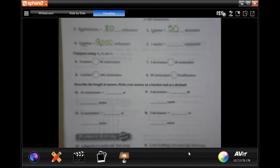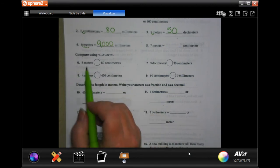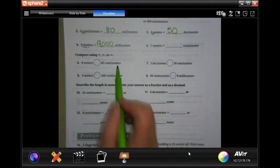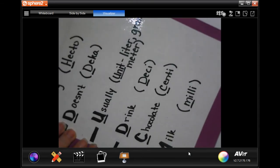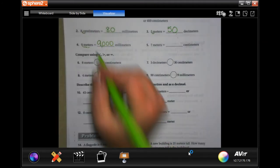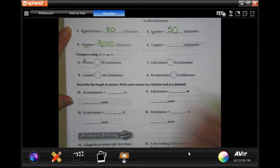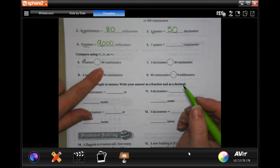So eight meters to centimeters. Remember we always want to start with the bigger unit. Meters is bigger than centimeters. So eight meters and we're going to centimeters. Meters is under unit to centi, so one, two spaces. That would add one, two zeros, so 800 centimeters or 80 centimeters.